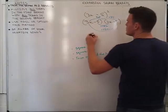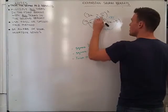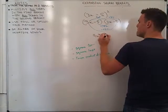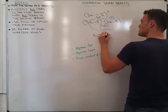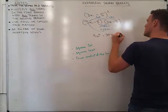But if I collect my like terms, I end up with 9x squared minus 30x plus 25.